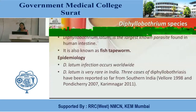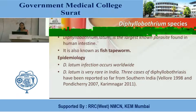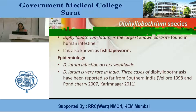Diphyllobothrium species — D. latum. D. latum is the largest tapeworm found in the human intestine; also known as the fish tapeworm. Epidemiology: D. latum infection occurs worldwide. It is very rare in India — only three cases have been reported so far from South India: Vellore in 1998, Pondicherry in 2007, and Karimnagar in 2011.